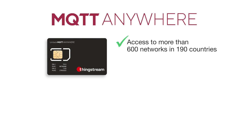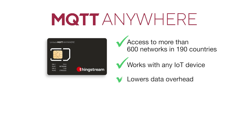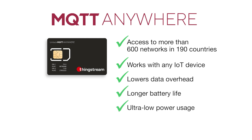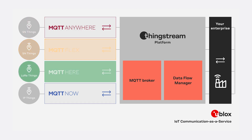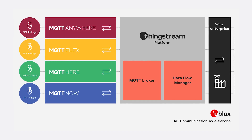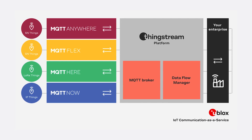With access to more than 600 cellular networks in 190 countries, MQTT Anywhere can be used within any type of IoT device to send and receive messages. MQTT lowers the data overhead to enable long-life, ultra-low-power IoT devices. Choose from a suite of MQTT communication solutions that solve your device-to-enterprise data challenge.